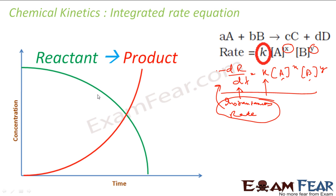For that we have to plot the graph and at a given point we have to find the tangents — it's a very difficult process. For example, you keep doing the experiment, you get a graph of the reactant, and to find d[R]/dt you plot the graph, put a point, find a tangent, put a minus sign. Same thing here. It's a very difficult process. To avoid this, if you see, this is an integral equation.